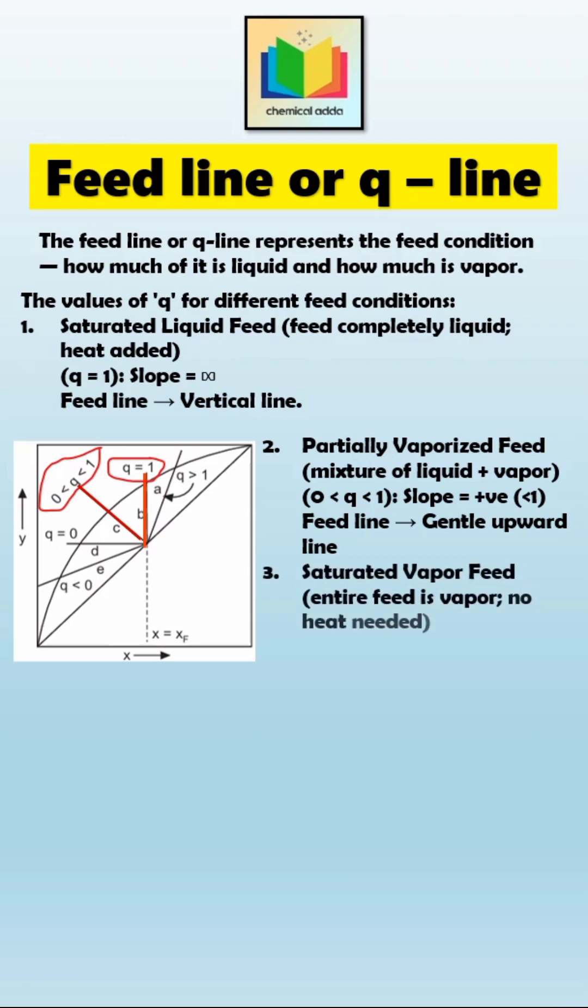If the feed is a saturated vapor, that means it's entirely vapor, so there's no need to add heat at the feed point. For this condition, Q equals 0 and the slope becomes 0. That means the Q line is horizontal on the diagram.